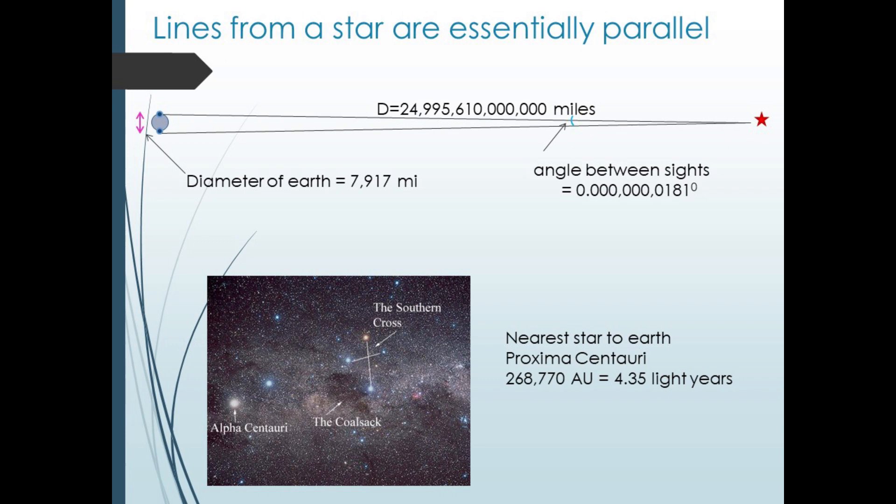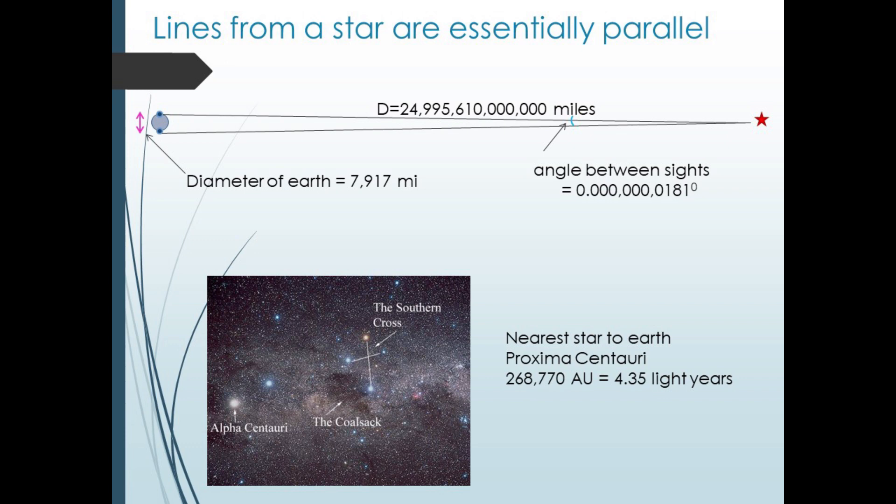So now let's start looking at the stars. Stars are very far away, very, very far away. Other than the Sun, our nearest star, Proxima Centauri, is about 25 trillion miles from Earth. As a result of this great distance, if two people were on opposite sides of the Earth pointing at the same star, the angle between their arms would be about 0.0000000181 degrees. So for purposes of calculation, we're going to assume that all lines pointing to the same star are parallel.